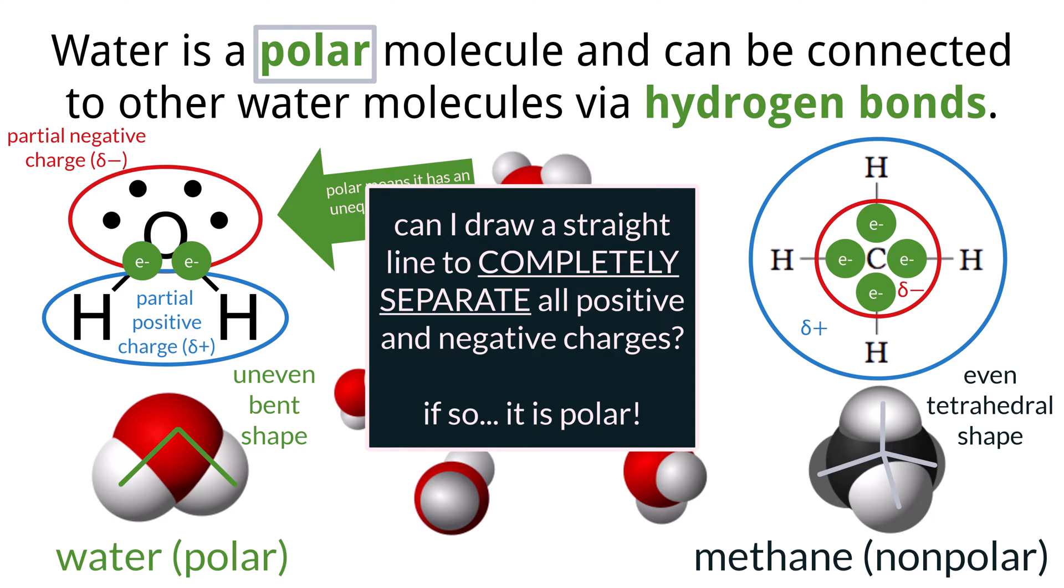An easy way to tell if a molecule is polar or not is to ask yourself: can I draw a straight line through this molecule and have all of the positive charges on one side and all of the negative charges on the other? If you can do that, the molecule, or at least the part of the molecule, should be polar.